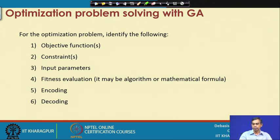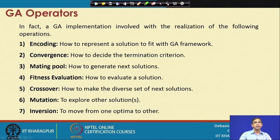These optimization problem-solving approaches with GA are carried out by means of what are called operators. These operators are basically functions such as encoding, crossover, mating pool creation, fitness evaluation, mutation, and inversion — these are all called operators.